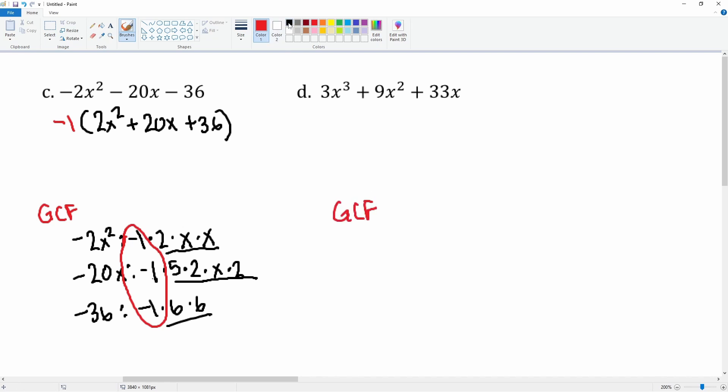Part d: let's find the GCF of 3x³ + 9x² + 33x. The first term 3x³ expands to 3 times x times x times x. Then 9x² is 3 times 3 times x times x. And 33x is 3 times 11 times x.